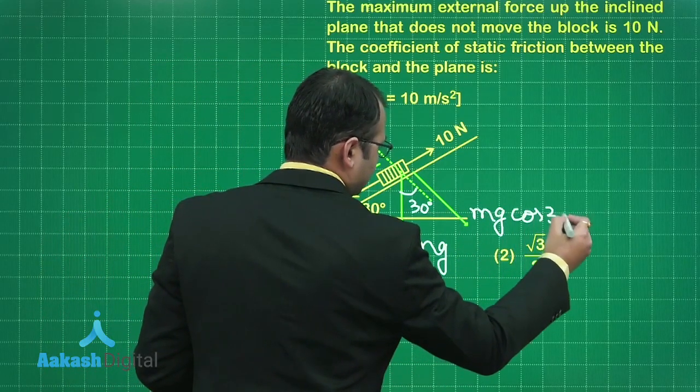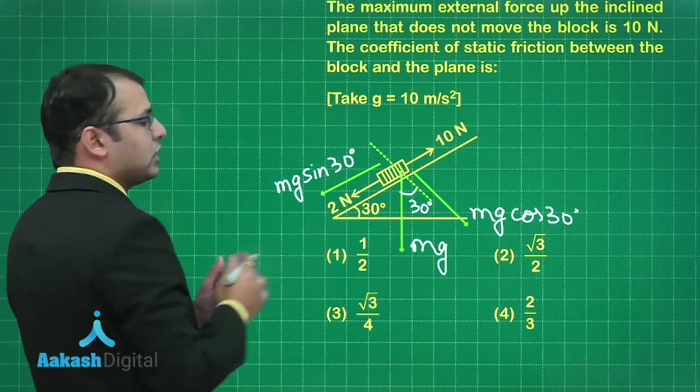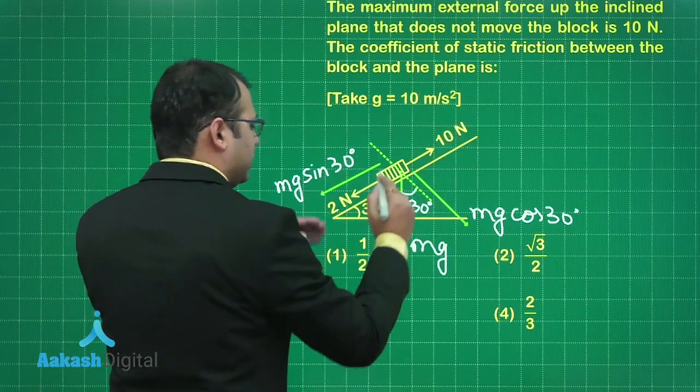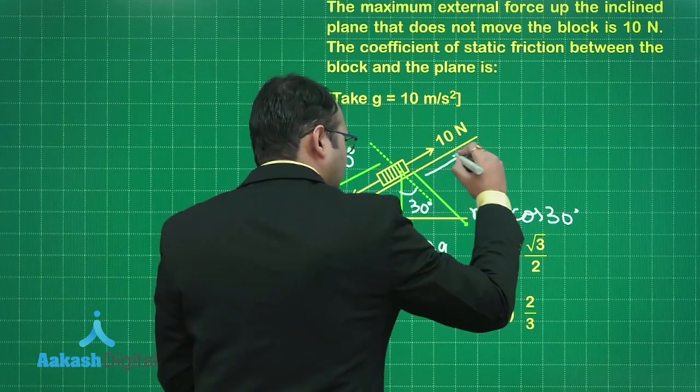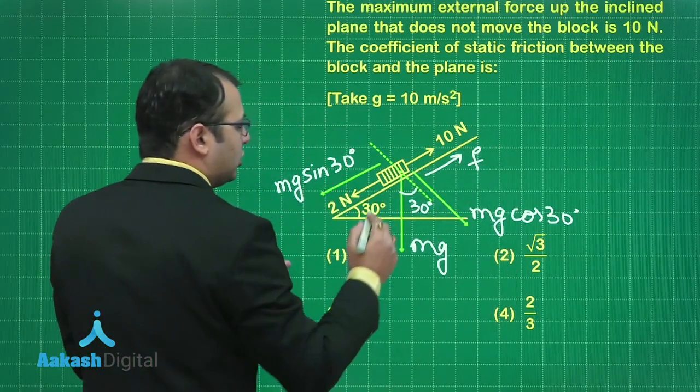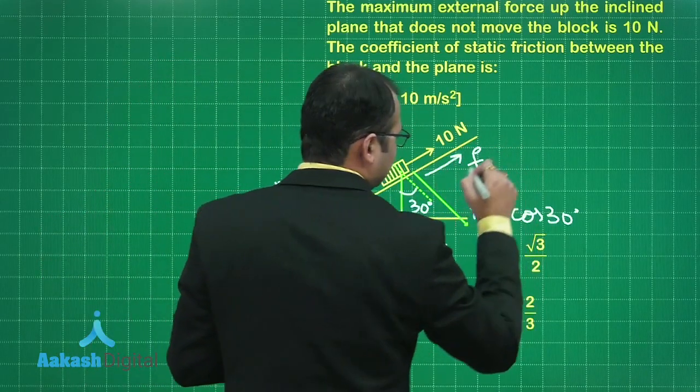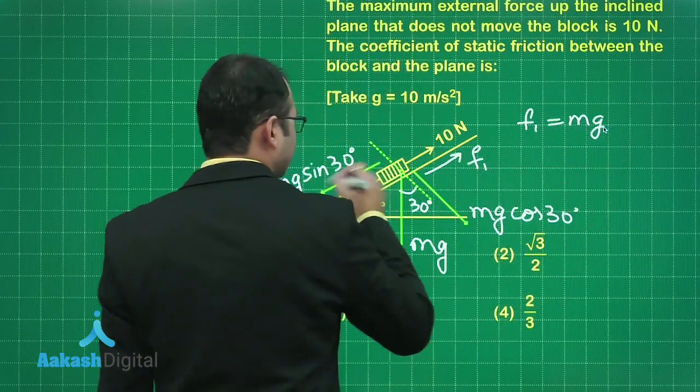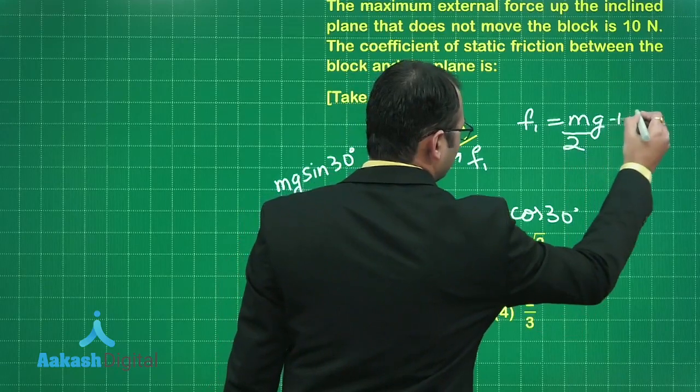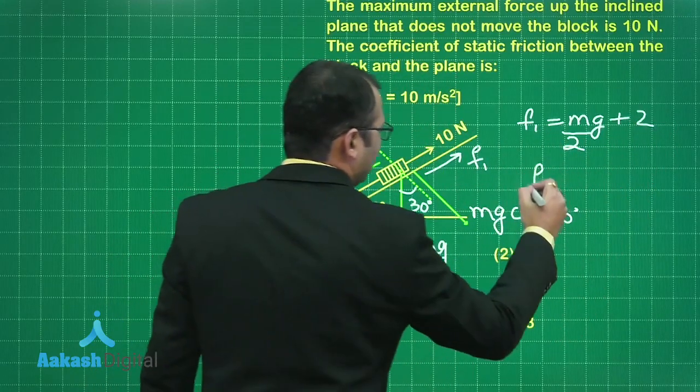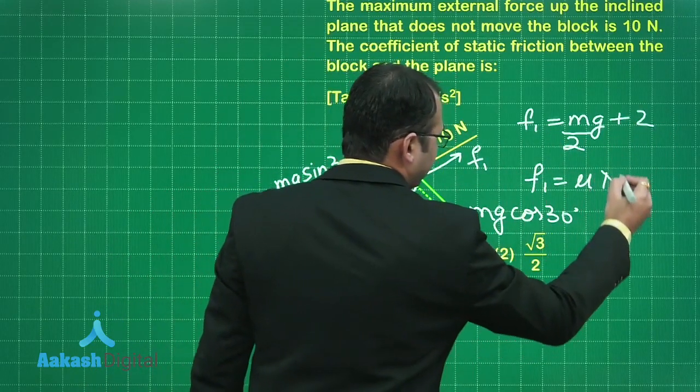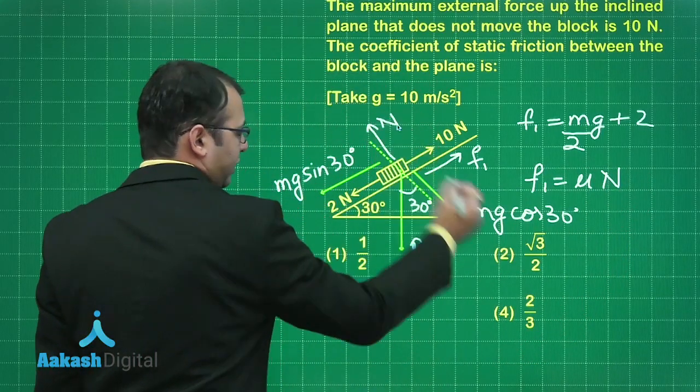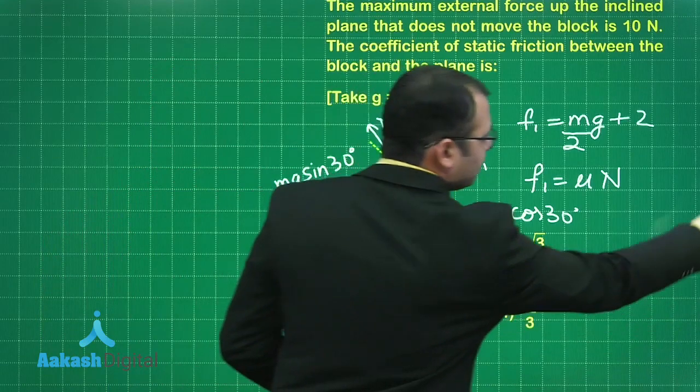This would be mg sin 30 and this would be mg cos 30. When we take only this force into account, it is trying to go this side so friction will be upwards. In this case, f₁ should be equal to mg sin 30, that is mg/2 plus 2. The value of f₁ would be μ times N, and N would be equal to mg cos 30.